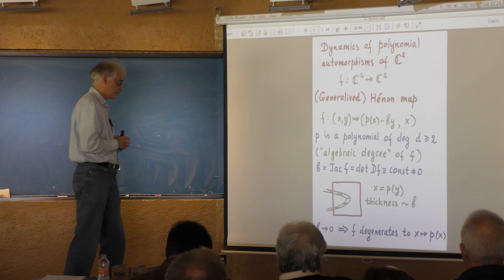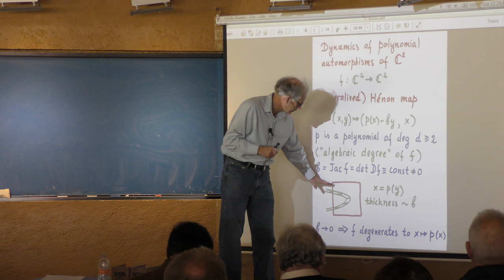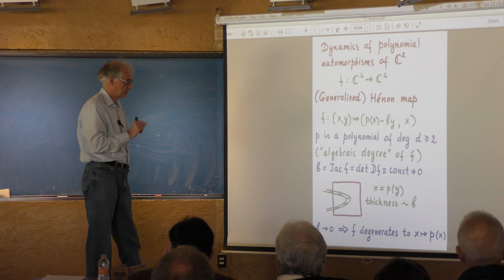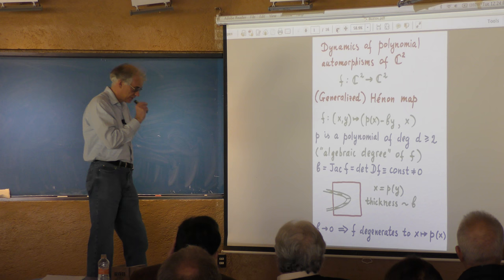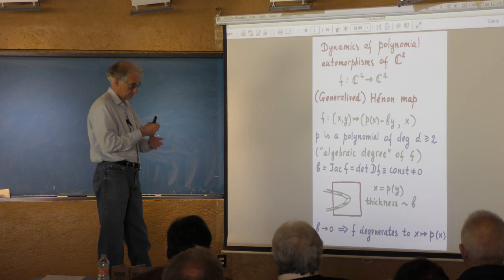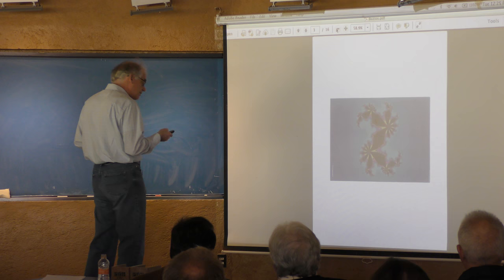If b equals zero, the map degenerates to a one-dimensional map — everything degenerates to dynamics on the parabola x = p(y). For small b, you think of this map as a perturbation of one-dimensional dynamics. Dissipative Hénon maps should be considered as small perturbations of one-dimensional polynomials. So we can start with understanding one-dimensional theory, which is very well-developed. Let me remind you of the situation in dimension one, and then we will see how to generalize it to the two-dimensional case.